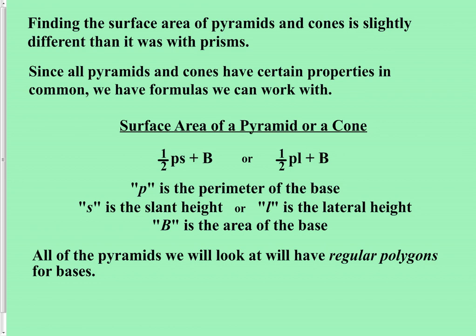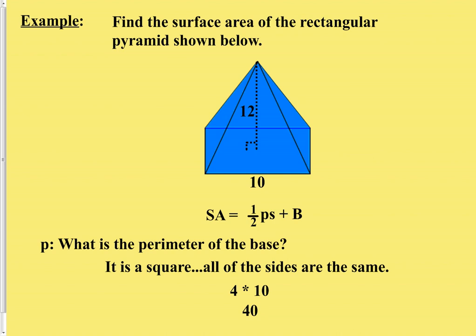This has been simplified a little bit for us because all the pyramids we have seen have had regular polygons on their bases, so we haven't had to worry about any unusual base shapes. In some cases, you might be missing some information to plug into the formula, in which case we employ the same strategies we've been using all along: build a right triangle and use the Pythagorean theorem, SOHCAHTOA, or the 30-60-90 or 45-45-90 rules to find the missing side length. Then plug in your information and you're good to go.